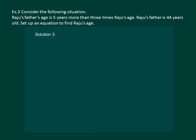Now since we do not know Raju's age, let us assume let Raju's age be X years. And let us read the question again: Raju's father's age is 5 years more than 3 times Raju's age.